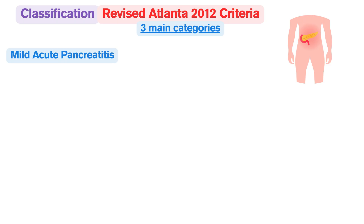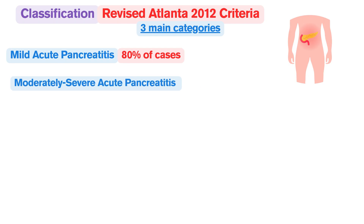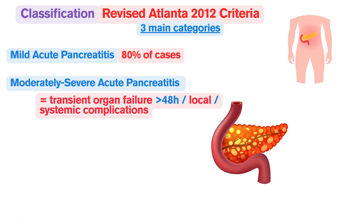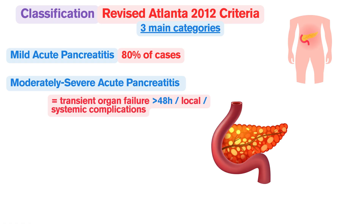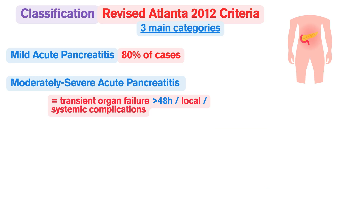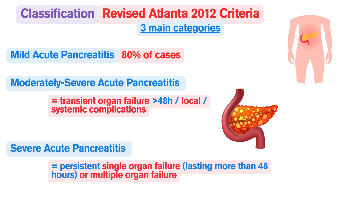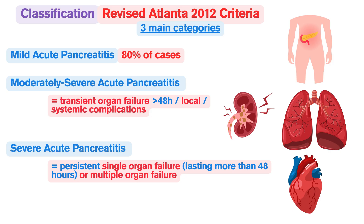Mild acute pancreatitis is the most common form, accounting for about 80 percent of cases. It is characterized by the absence of organ failure and the absence of local or systemic complications. Moderately severe acute pancreatitis presents with either transient organ failure lasting less than 48 hours, or local or systemic complications, but without persistent organ failure. Severe acute pancreatitis is defined by the presence of persistent single organ failure lasting more than 48 hours, or multiple organ failure.